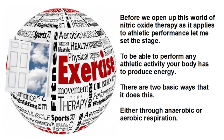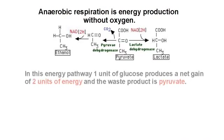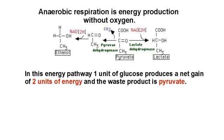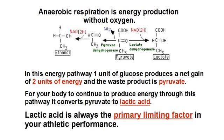Either through anaerobic or aerobic respiration. Anaerobic respiration is energy production without oxygen. In this energy pathway, one unit of glucose produces a net gain of two units of energy, and the waste product is pyruvate. For your body to continue to produce energy through this pathway, it converts pyruvate to lactic acid. Lactic acid is always the primary limiting factor in your athletic performance.